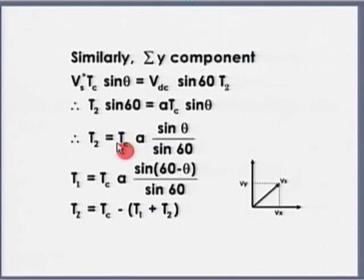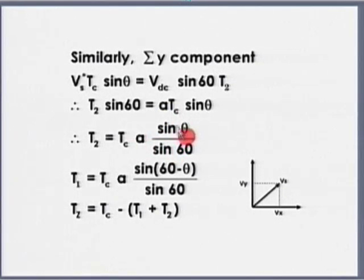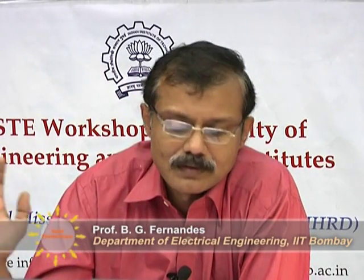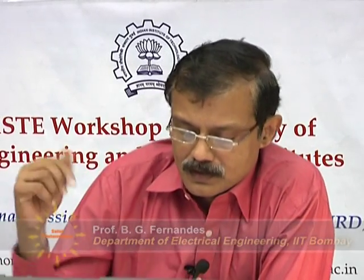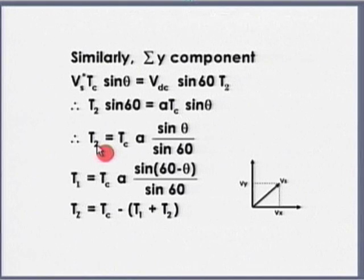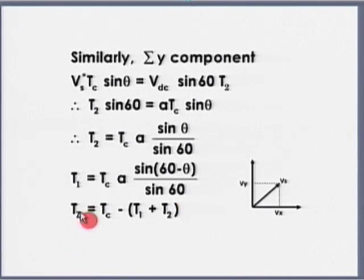T2 equals Tc (the sampling time) times A (modulation index) times sinθ divided by sin60°. The only variable is sinθ, the angle which the space vector makes with the X axis. Since this vector is rotating, if I know the frequency (50 hertz) and the time, I can determine sinθ. Once I know T2, I can calculate T1. T1 is given by Tc·A·sin(60°−θ) / sin60°. The time for which the zero vector is applied is given by Tc minus T1 minus T2. Note: Tc is Ts/2.